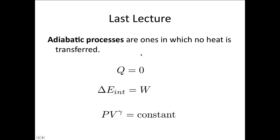So last lecture, we had a look at adiabatic processes. We said adiabatic processes are ones in which no heat is transferred. So that means Q equals 0, which the first law of thermodynamics then becomes that the change in internal energy is equal to the work done. And we showed that in this case, the equation PV to the gamma is constant applies. And gamma, in this case, is C_P over C_V, where C_P is the specific heat of the gas at constant pressure and C_V is the specific heat of the gas at constant volume.